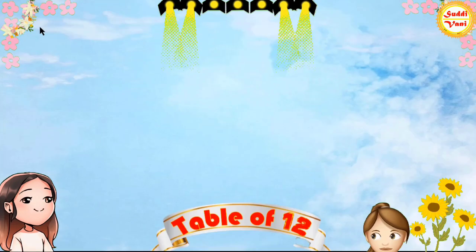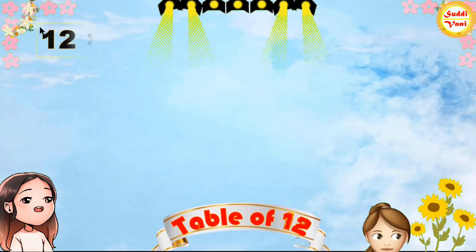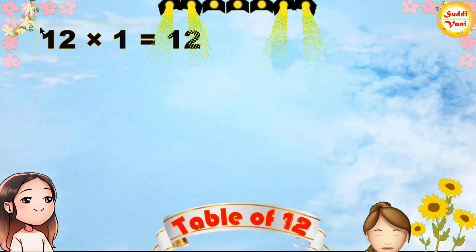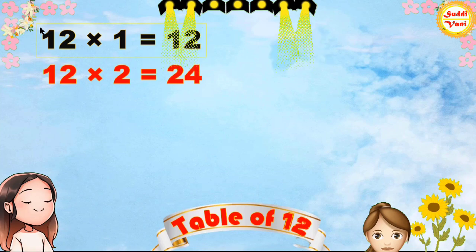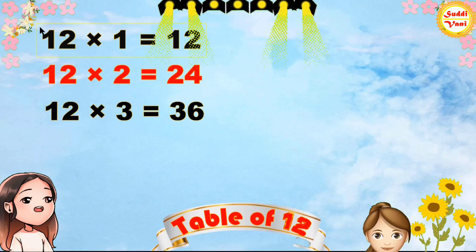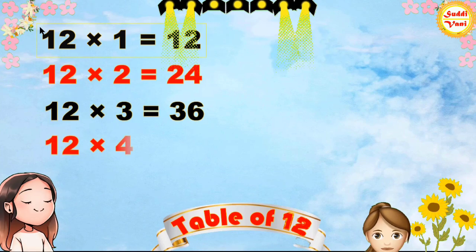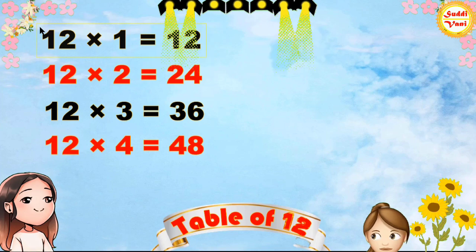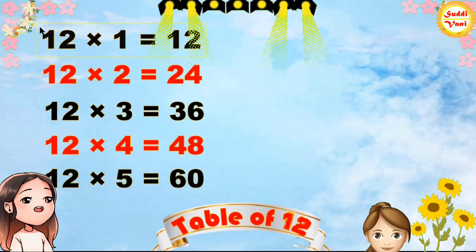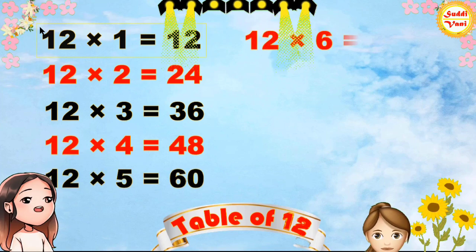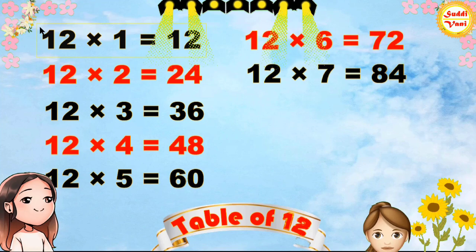Once again: 12 × 1 = 12, 12 × 2 = 24, 12 × 3 = 36, 12 × 4 = 48, 12 × 5 = 60, 12 × 6 = 72, 12 × 7 = 84.